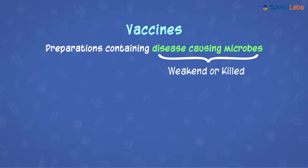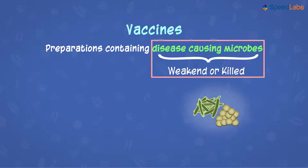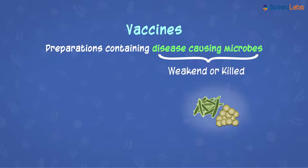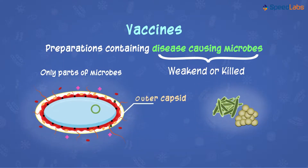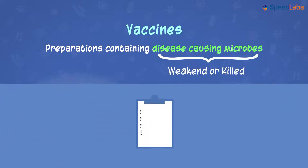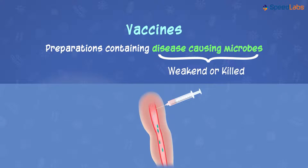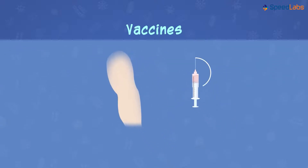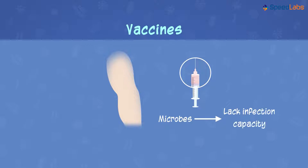Vaccines contain the weakened or killed forms of these microbes. Sometimes, vaccines also contain only a few important parts of the microbes, such as the outer capsid, the membranes, or even microbial toxins. Just like we have mock exams before the finals, we give our body an introduction to these microbes, but by injecting only those microbes which lack the capacity of infection.